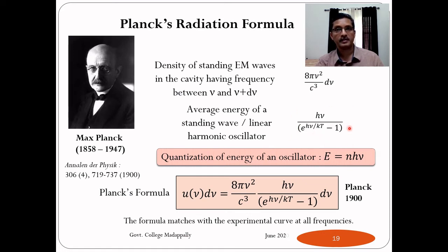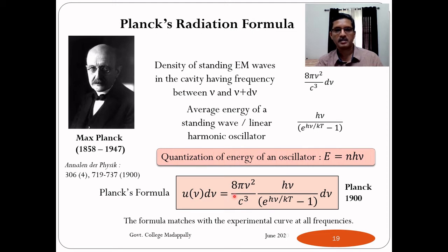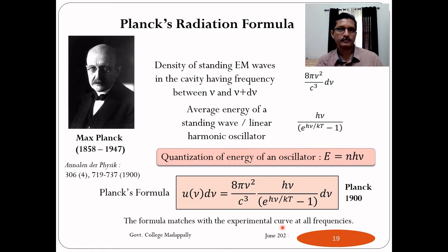Multiplying the number density of standing waves by this average energy gives Planck's radiation formula: u(ν)dν = (8πν²/c³)·(hν/(e^(hν/kT) − 1))·dν. This formula, derived by Max Planck towards the end of 1900, matches with the experimental curve at all frequencies. It is the correct radiation formula for blackbody radiations.